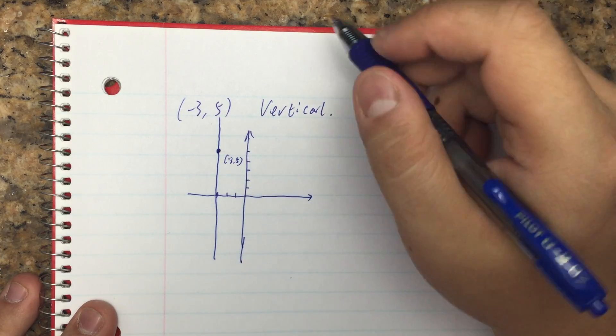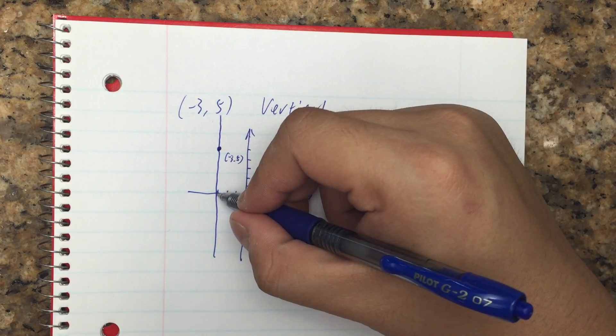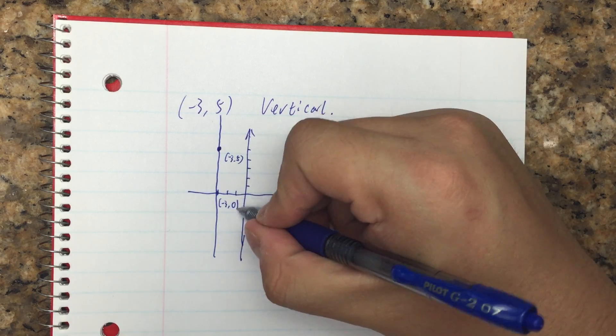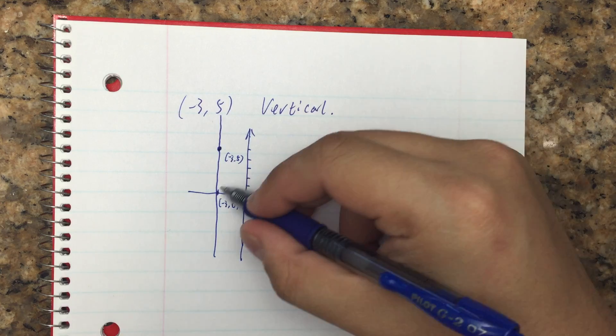Then observe the graph. On this value, this point, x value is -3, y value is 0. It's called the x-intercept.